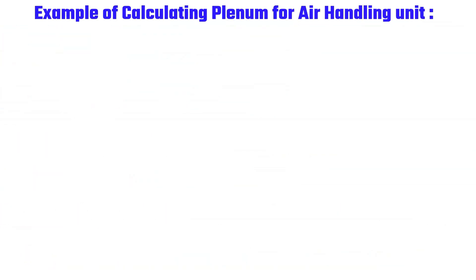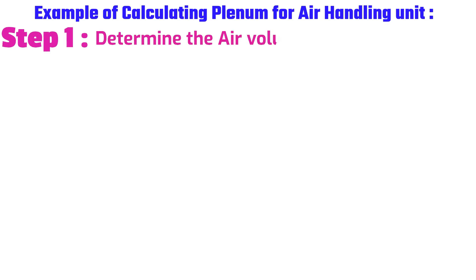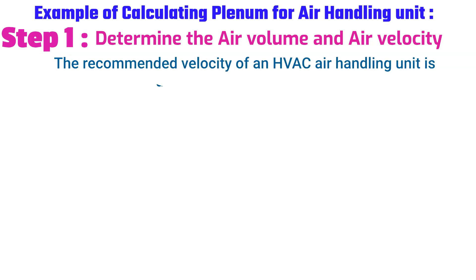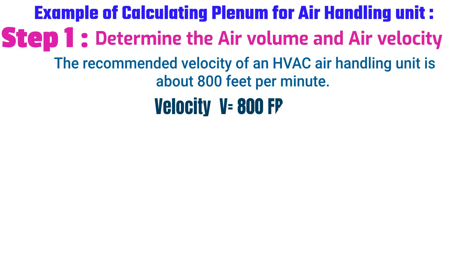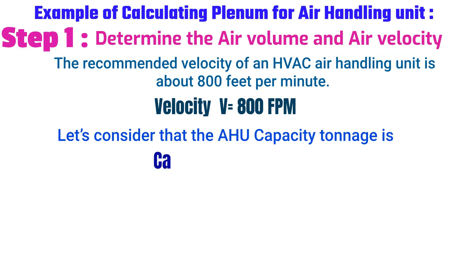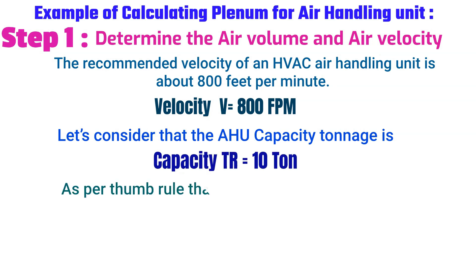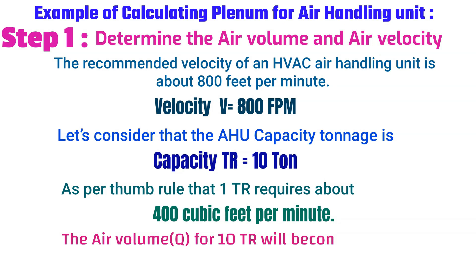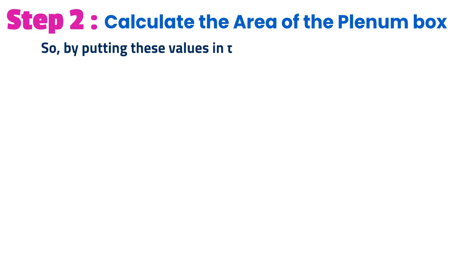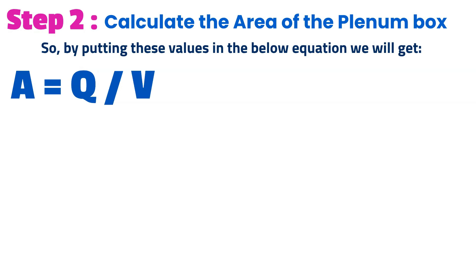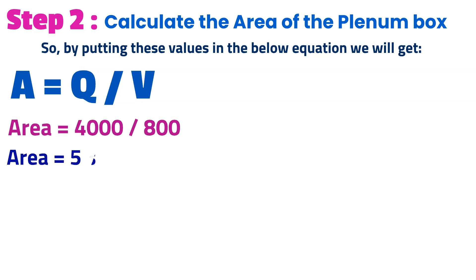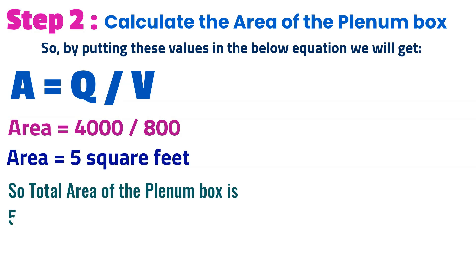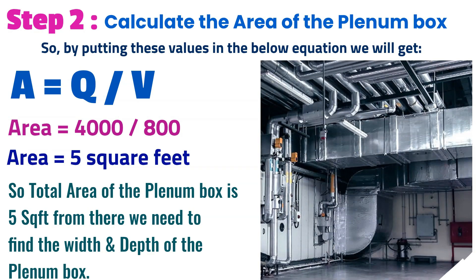Example of calculating a plenum for an air handling unit. Step 1 — determine the air volume and air velocity. The recommended velocity for an HVAC air handling unit is about 800 FPM, so V = 800 FPM. For an air handling unit capacity of 10 tons (TR), using the thumb rule that 1 TR requires about 400 CFM, the air volume Q = 10 × 400 = 4,000 CFM. Step 2 — calculate the area: A = Q ÷ V = 4,000 ÷ 800 = 5 square feet. The total area of the plenum box is 5 square feet. From this, we need to find the width and depth.